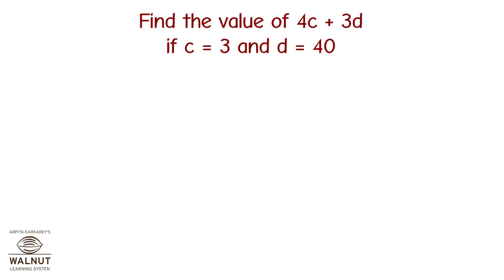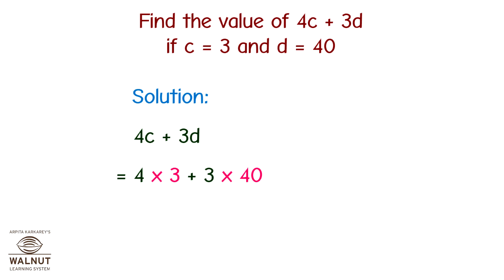Find the value of 4c plus 3d if c is equal to 3 and d is equal to 40. In this expression, we have two variables, c and d. So to find the value, we have to substitute the value of both variables into the expression. We have 4c plus 3d. Putting the values: 4 multiplied by 3 plus 3 multiplied by 40 equals 12 plus 120 equals 132. This is our answer.